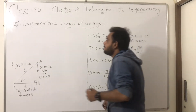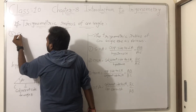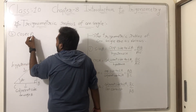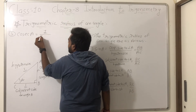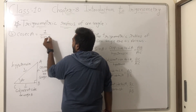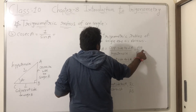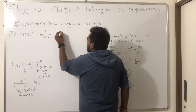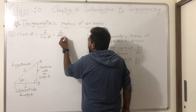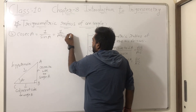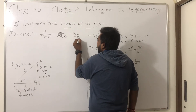The fifth one is cosec A. Cosec A means 1 upon sin A. Sin A is AB by AC, so cosec A equals 1 upon AB by AC, which gives us AC by AB.